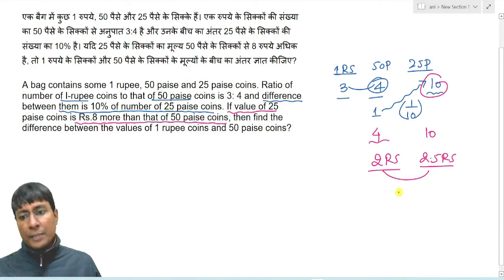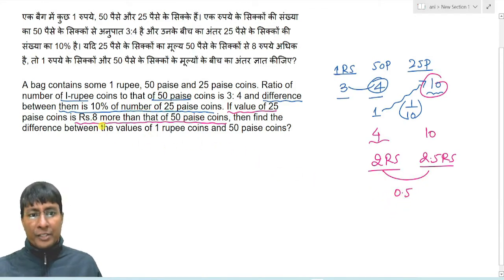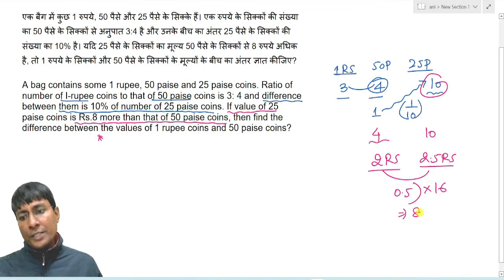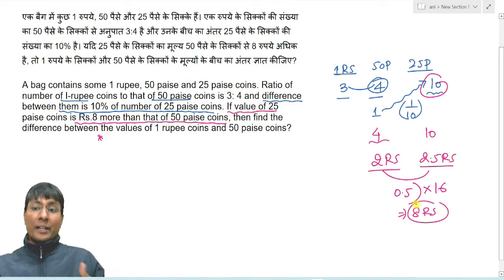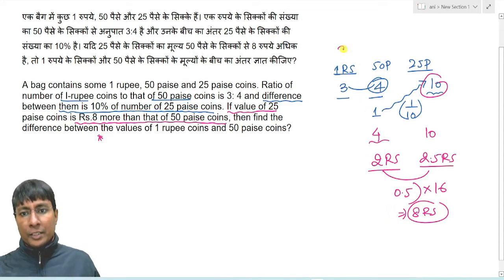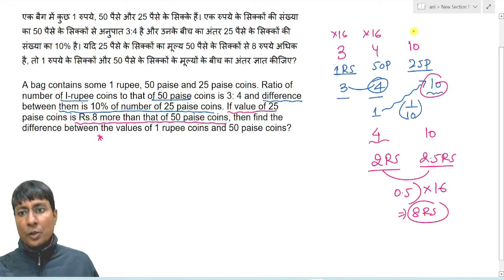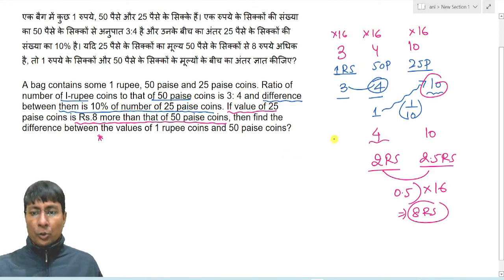The difference between these two values is 0.5 rupees, but we need a difference of 8 rupees. To maintain a difference of 8, we multiply by 16 — then we get a difference of 8 rupees. So the original numbers 3, 4, and 10 must all be multiplied by 16.